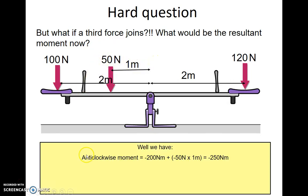So now we have an anti-clockwise moment of minus 200 newton meters here. Plus, I'm going to put the minus in there to show it's another anti-clockwise moment, 50 times 1. So if I add these two together, I get minus 250 newton meters.